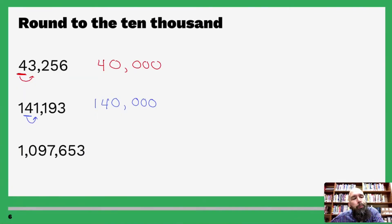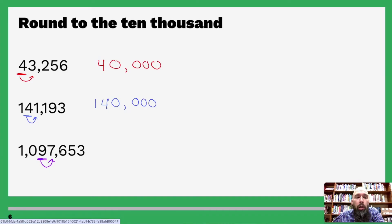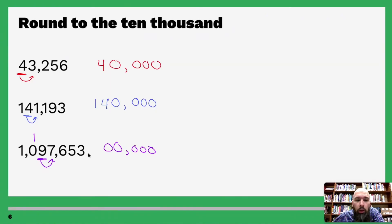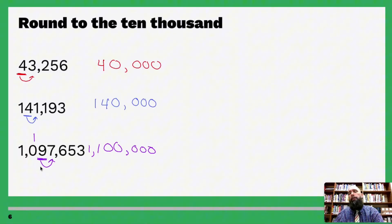One more of these — ones, tens, hundreds, thousands, ten-thousands. Go to the right — five or above, give it a shove! Let's put our one, two, three, four zeros. Since nine is five or above, we shove nine up to ten — which means you put a zero there and add one to the next digit. So you become one, and then that one is hanging out. One million, one hundred thousand. Kind of tricky — we saw a problem like this before.